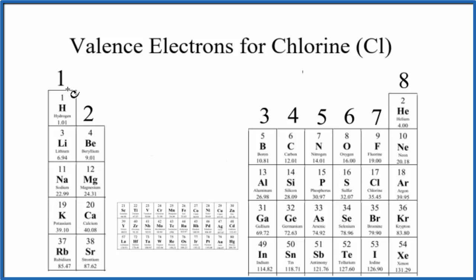Group one here, all of these have one valence electron. Group two, they all have two valence electrons. We skip the transition metals, but then group 13 through 18 have three through eight valence electrons. We're going to find chlorine, which is right here in group 17, sometimes called 7A. It has seven valence electrons.